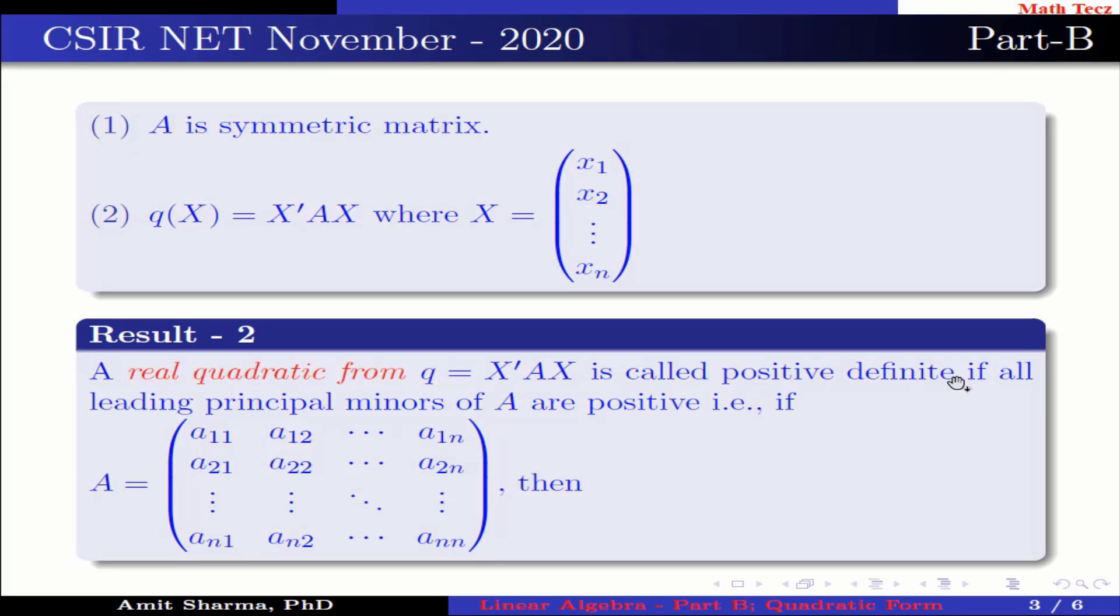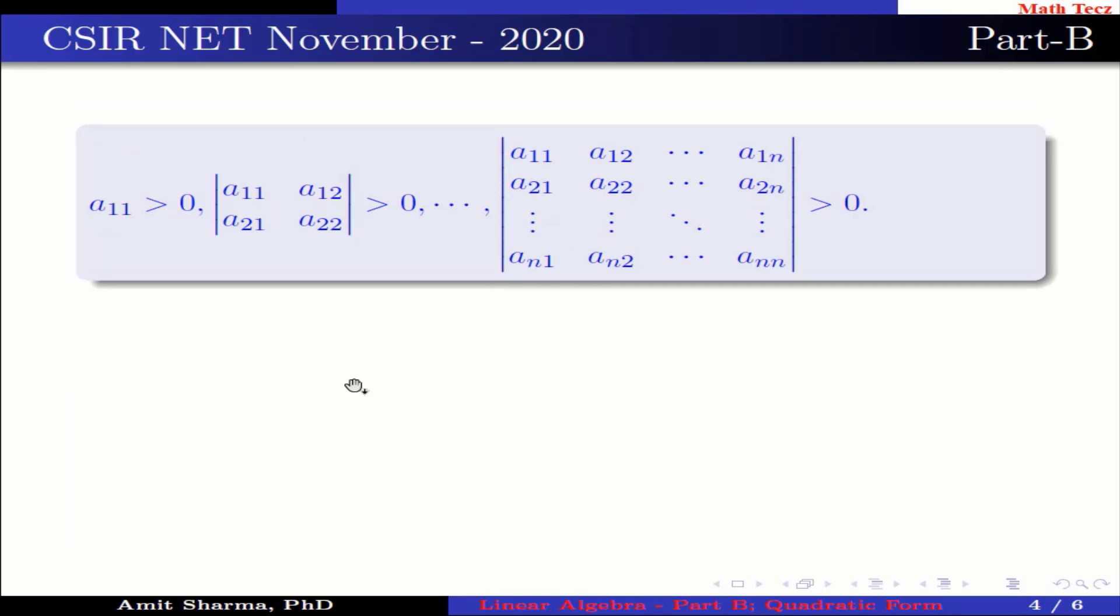Result number two: A real quadratic form Q = x'Ax is called positive definite if all the leading principal minors of A are positive. That is, if A is an n×n matrix, then a₁₁ should be greater than 0, the determinant of the 2×2 matrix having elements a₁₁, a₁₂, a₂₁, a₂₂ should be greater than 0, and so on, and the determinant of the n×n matrix should be greater than 0.